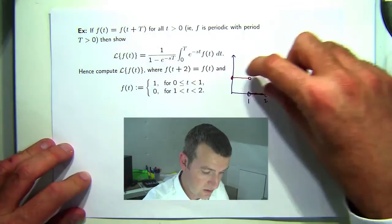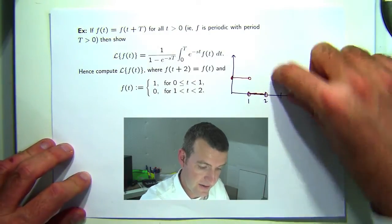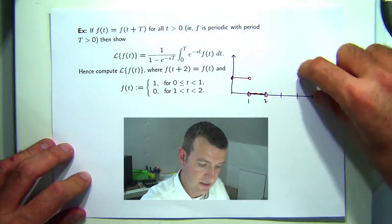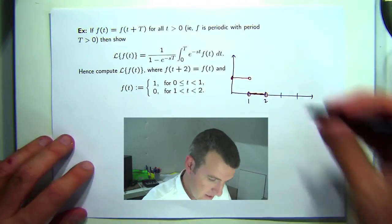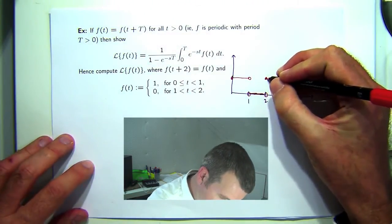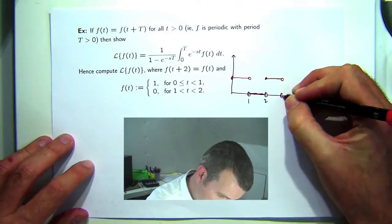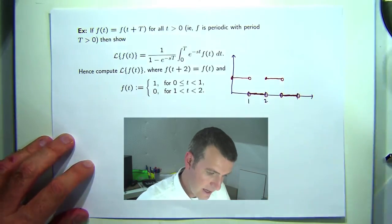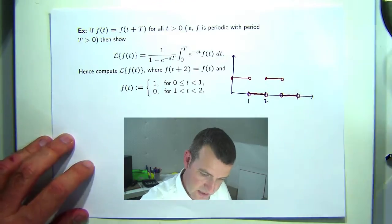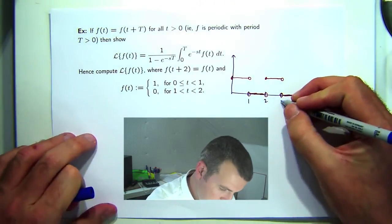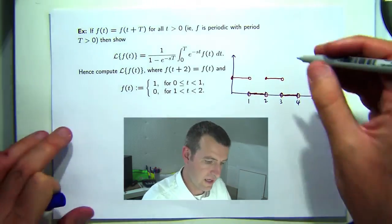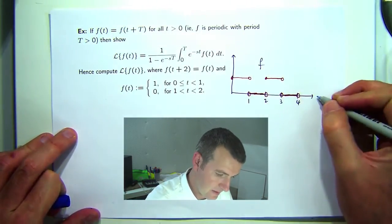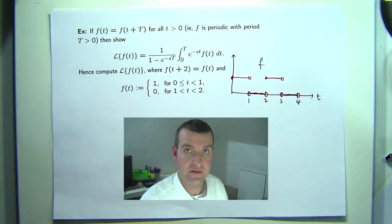Then all you do is you take the graph, you copy it, and you shift it, and you paste it. You copy it, you shift it, and you paste it. So you shift it two units. So if I was to do that, then I would get the following. And you copy that bit, shift it two units, and paste it. So this is how you can draw the graph of a periodic function.